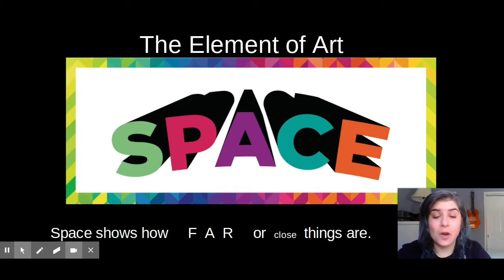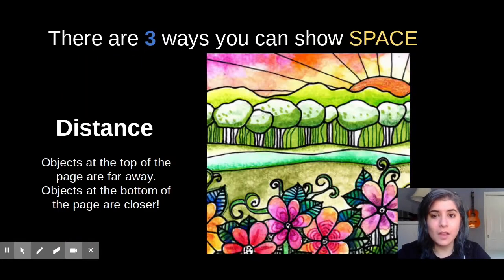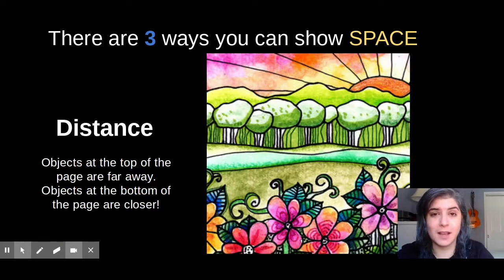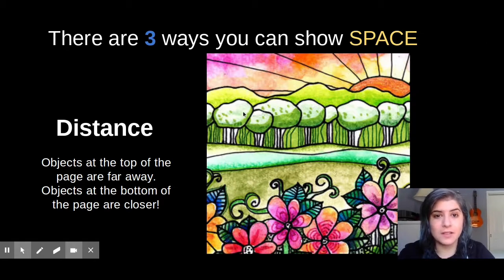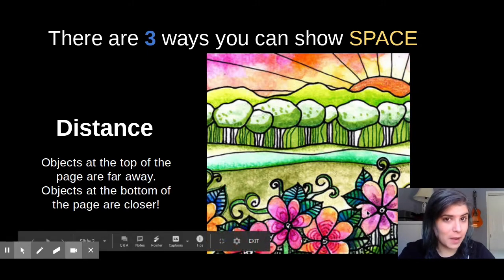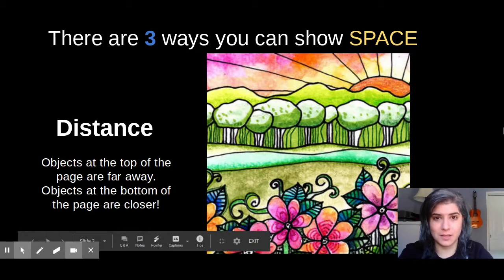First, we want to go over how we can show the element of art, space. The first way that you can show space is by using distance. Objects at the top of the page are the objects that are the furthest away from us, the viewer. As you get closer to the bottom of the page, these are the objects that are going to be closest to you.